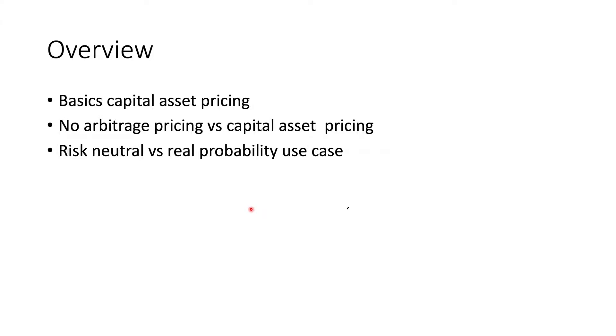Here's an overview of this section on what we're going to study. First I will talk about the basics of capital asset pricing and try to understand what it means. Then I'll give the contrast between capital asset pricing and arbitrage pricing. Then we'll talk about the different use cases of risk neutral versus the real world probability. Then using the information we learned here, we will solve the problem of optimal investment decision given uncertainty.